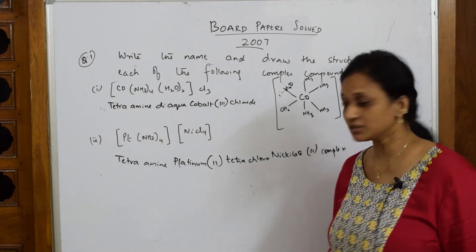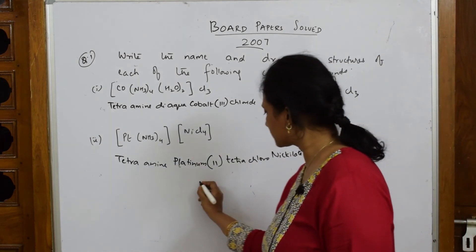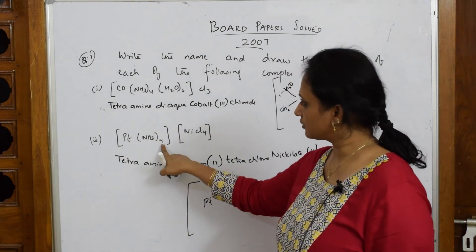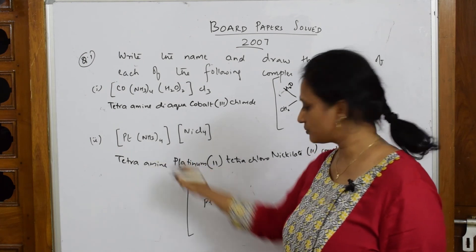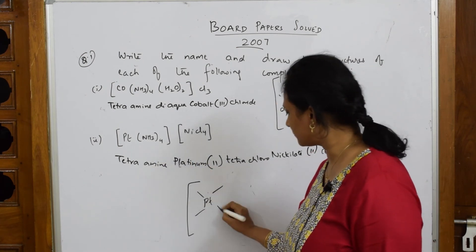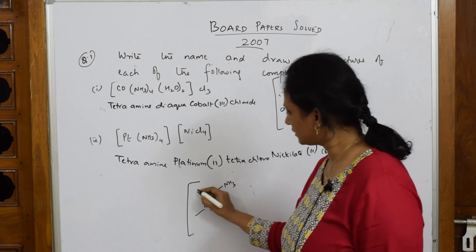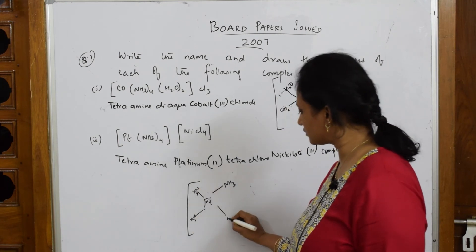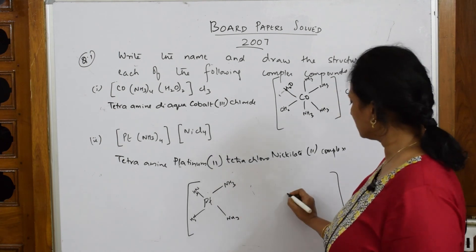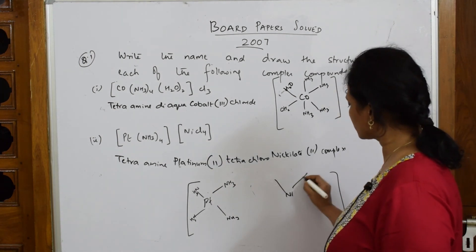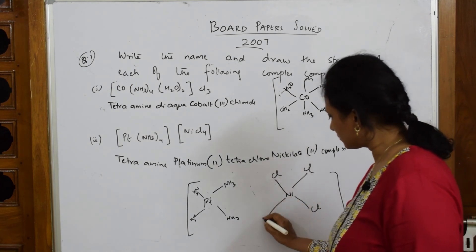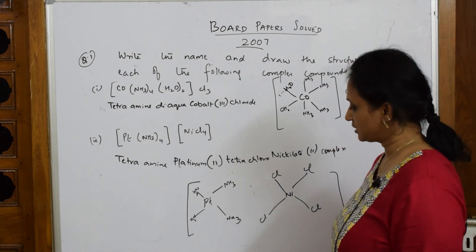I have to draw the structure now. First, make, because both are there in this way, so I'm going to make platinum. The coordination number is 4, so four places, 4 ammonias: NH3, NH3, NH3, NH3. Done. Now you have nickel in the center. You have 4 chlorines: 1 Cl here, one more Cl, Cl, and one more Cl. So this is your complex.